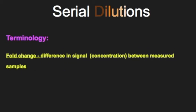So it's some terminology that will be used around this sort of data. Fold change refers to the difference in a signal and therefore concentration between the measured samples. For example, if the signal and therefore the concentration of one patient or treatment group is twice that of another, it is referred to as a two-fold change.